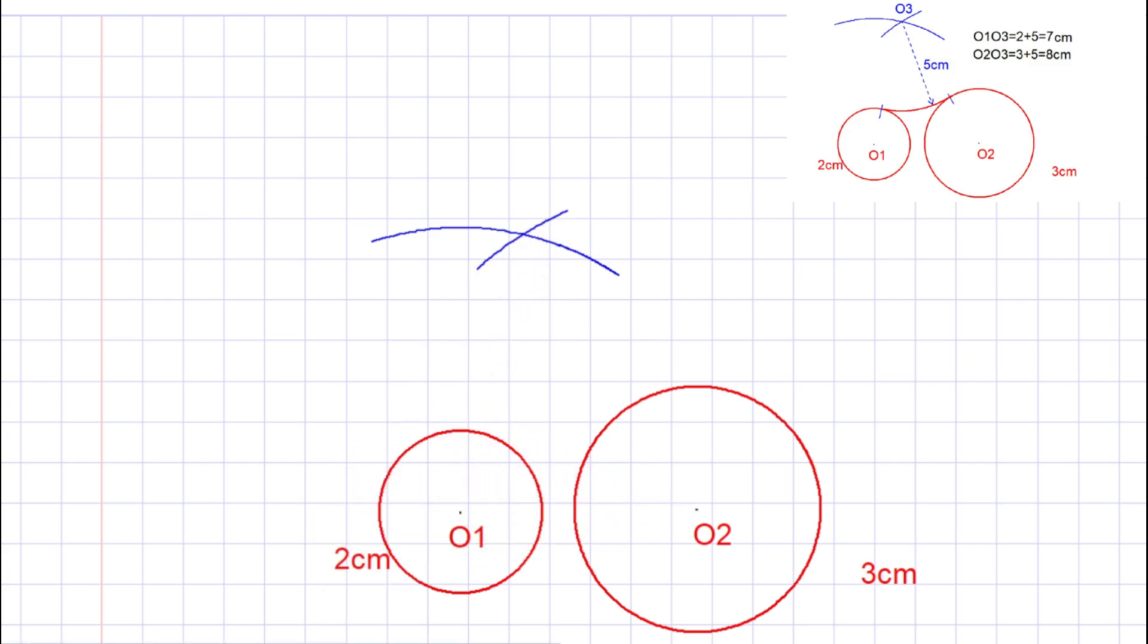The intersection point of these two arcs is the center point of the arc we are going to draw. Let's mark this point as O3.